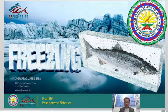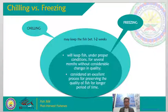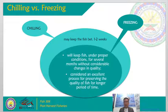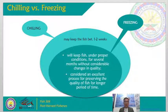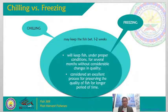As an introduction, let us first differentiate chilling versus freezing. In our previous discussion, we understand that chilling may keep the fish or aquatic products for only one to two weeks. In contrast, although they are both cold processing methods that involve aquatic products, freezing will keep the fish under proper conditions for several months without considerable changes in quality. Freezing is considered an excellent process for preserving the quality of fish for a longer period of time.